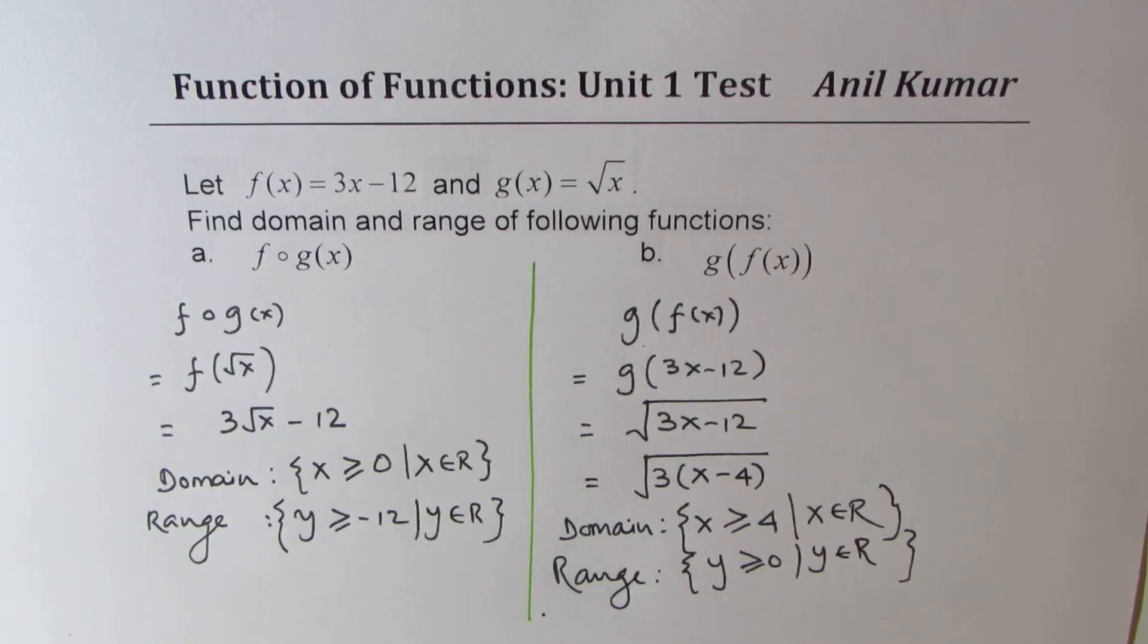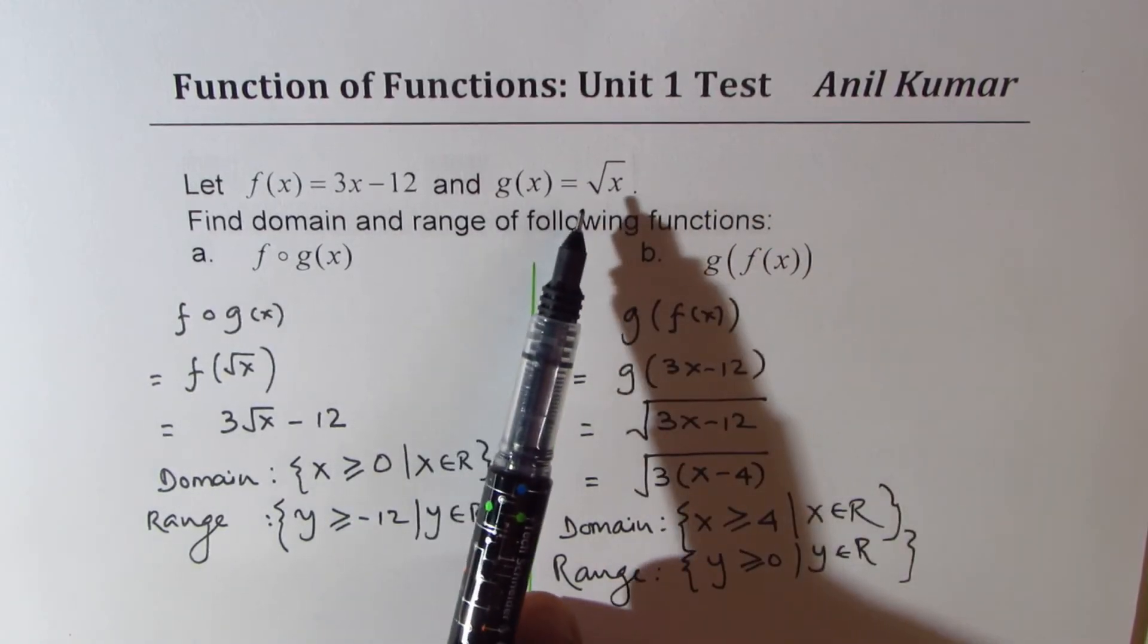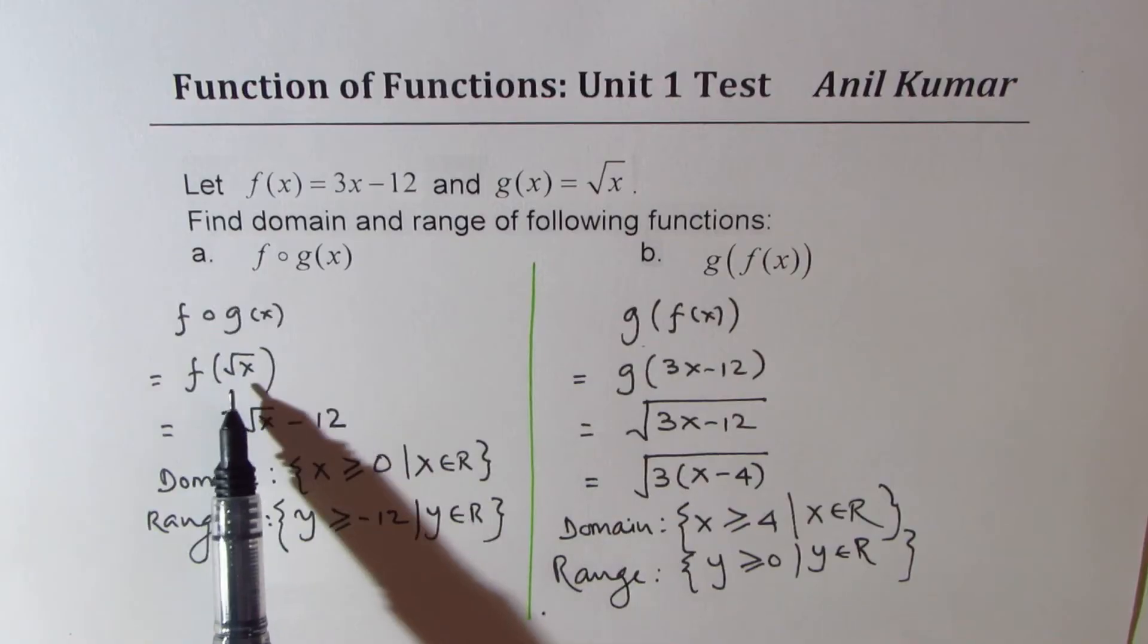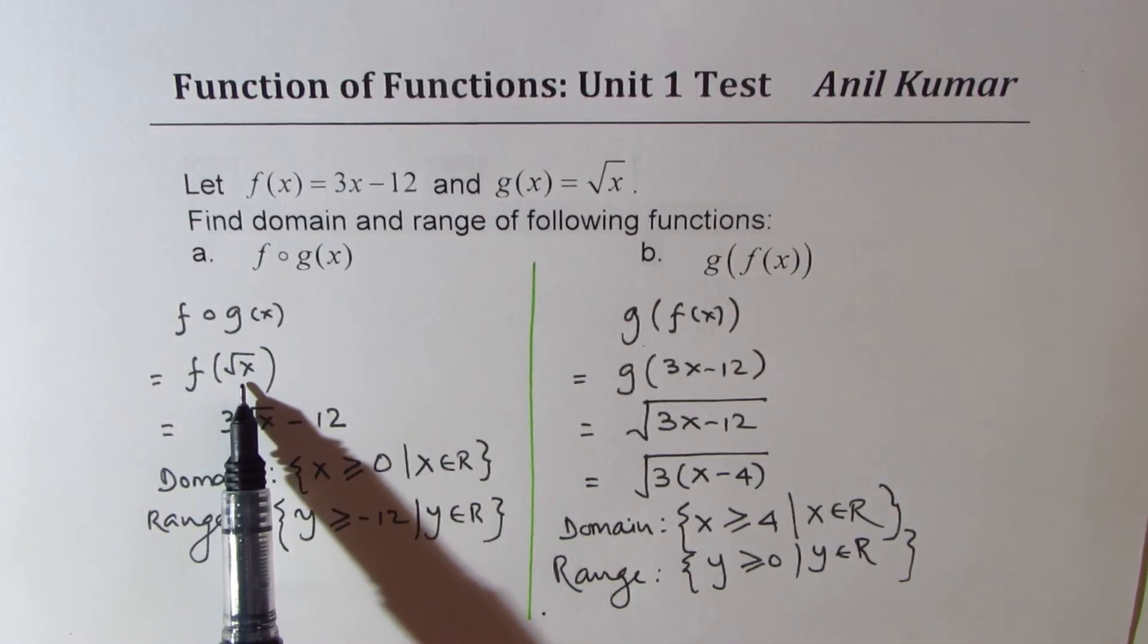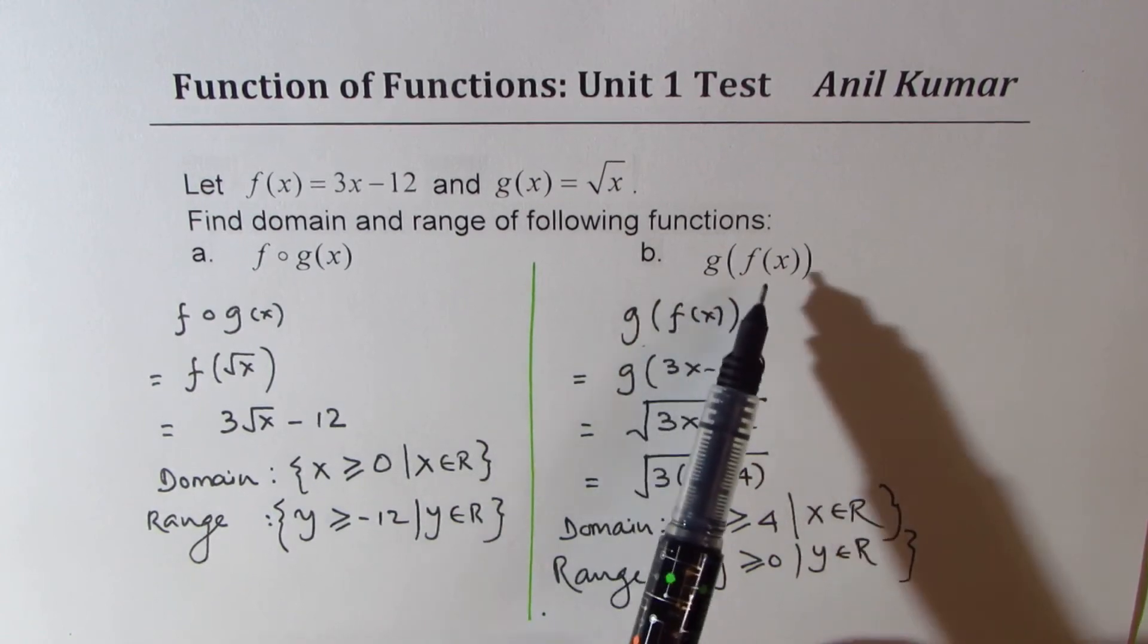So what you notice here is that the domain actually is restricted because of the function square root of x, correct? Now, here, square root of x has to be greater than or equal to 0, but when you do g of f of x, f of x comes in the inside function.